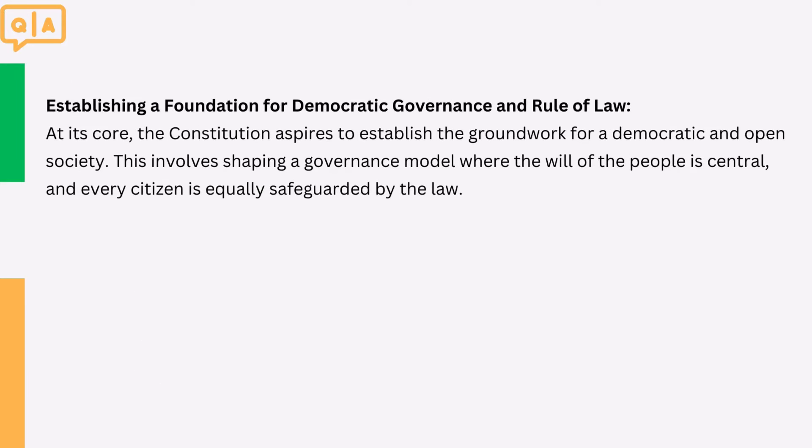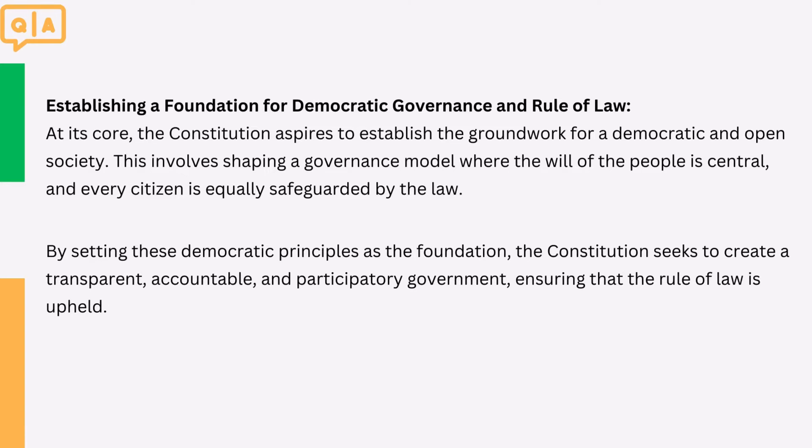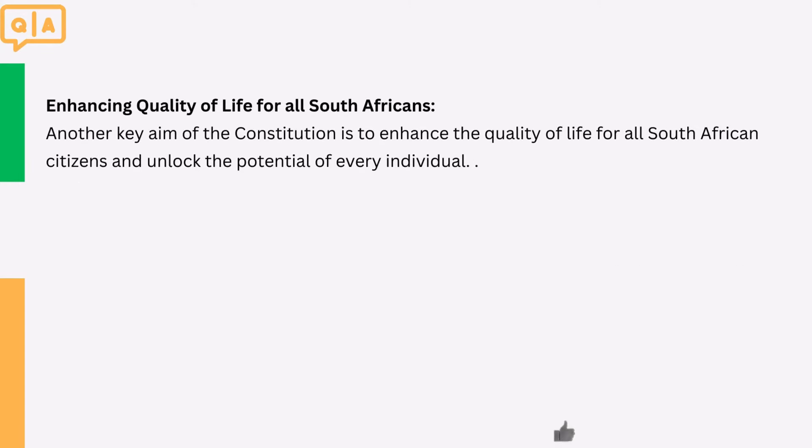2. Establishing a Foundation for Democratic Governance and Rule of Law. At its core, the Constitution aspires to establish the groundwork for a democratic and open society. This involves shaping a governance model where the will of the people is central, and every citizen is equally safeguarded by the law. By setting these democratic principles as the foundation, the Constitution seeks to create a transparent, accountable, and participatory government, ensuring that the rule of law is upheld.